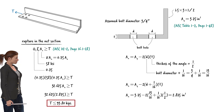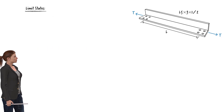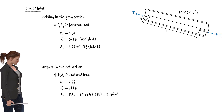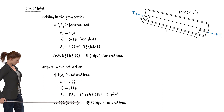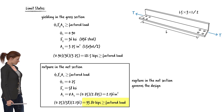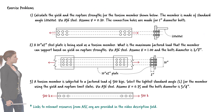If the factored load exceeds 93.8 kips, rupture failure in the net section becomes imminent. To summarize, this lecture presented two limit states for the design of tension members: yielding in the gross section, with a design strength of 121.5 kips, and rupture in the net section, with a strength of 93.8 kips. The rupture in the net section governs the design. We will continue our discussion on tension member design in the next lecture.